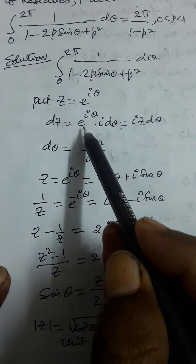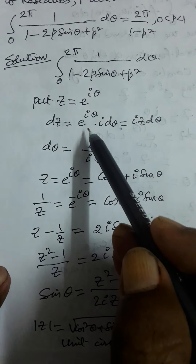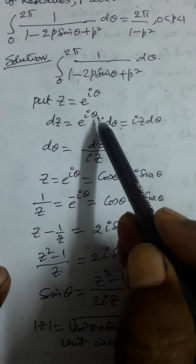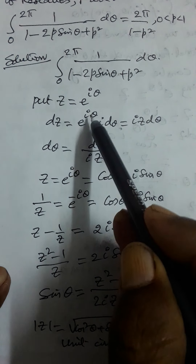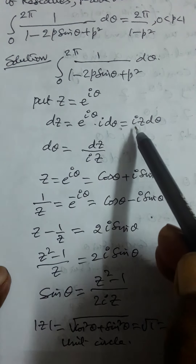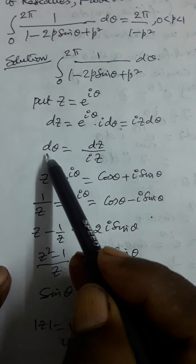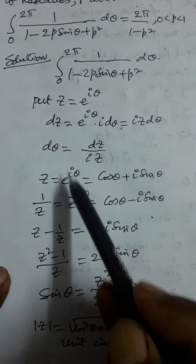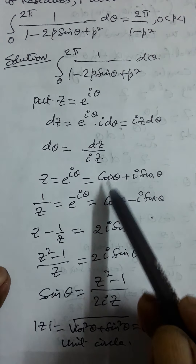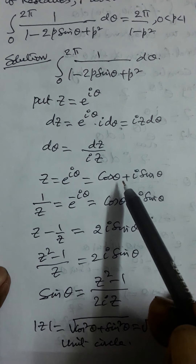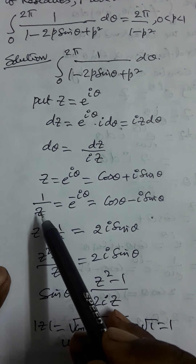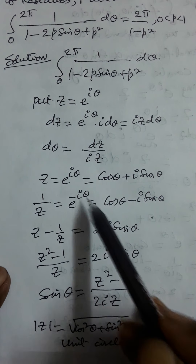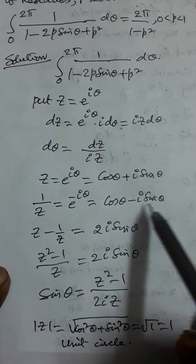Put, according to the known procedure already given in the last lesson: z = e^(iθ). Then dz = e^(iθ) · i dθ = iz dθ. From this, dθ = dz/(iz).